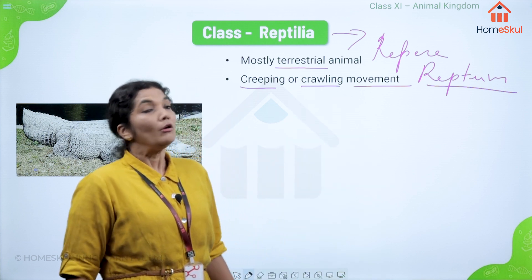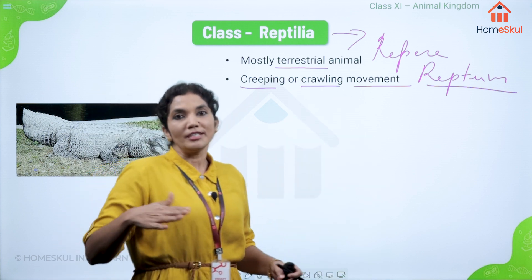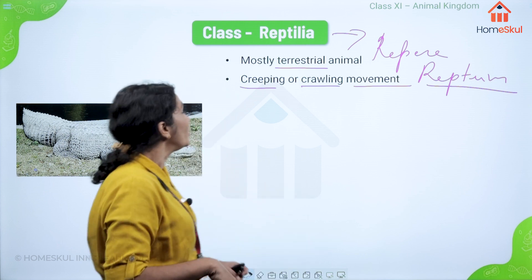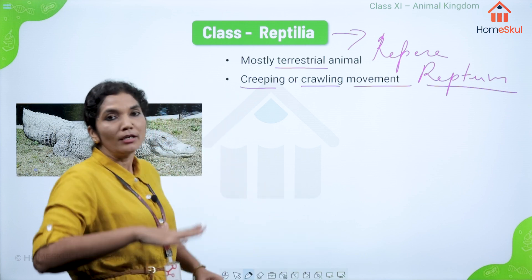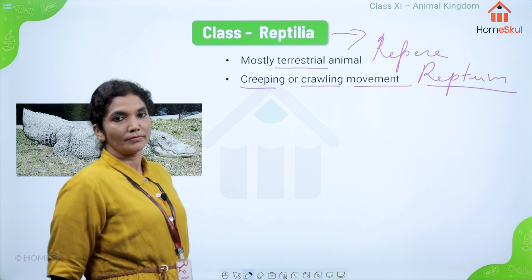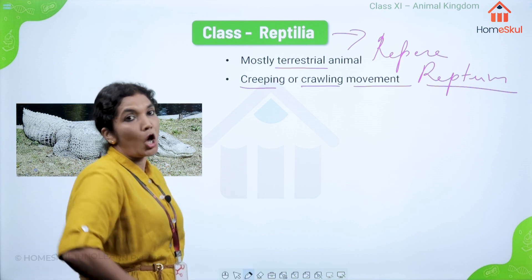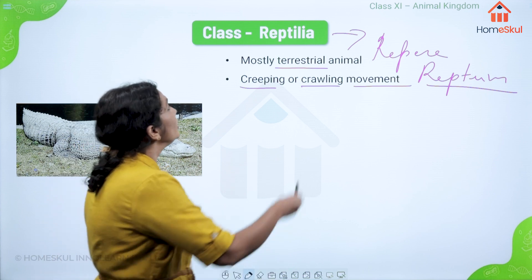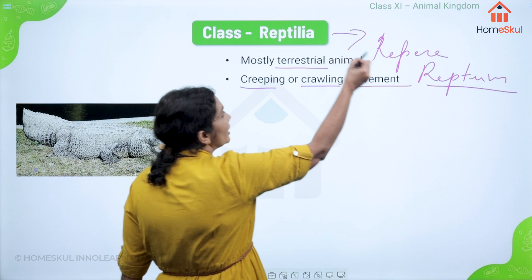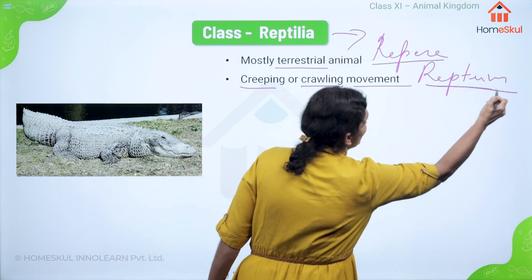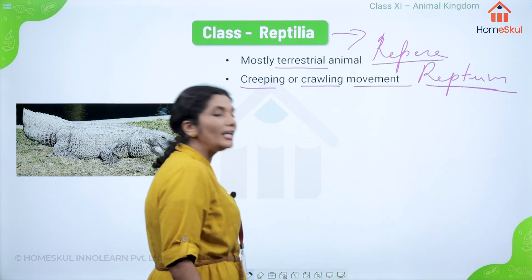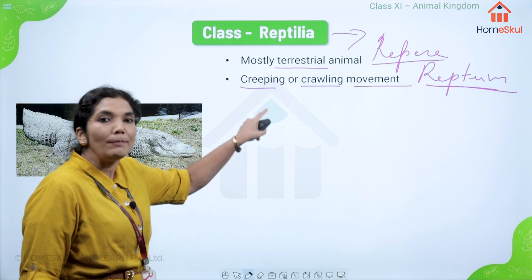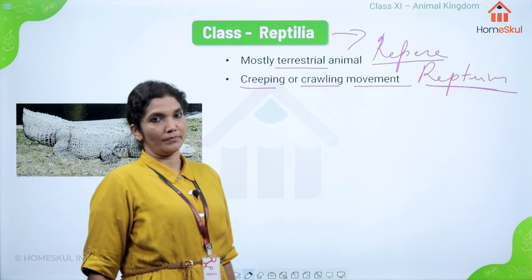What is called crawling? Snakes will be crawling. What is called creeping? Creeping means walking on the limbs — the belly will be off the ground and the animal walks on its limbs. So the word Reptilia comes from Repre or Reptum, which means the animals here will show creeping or crawling movement.